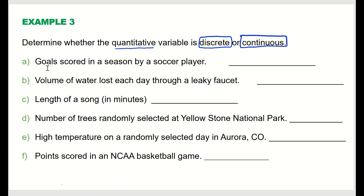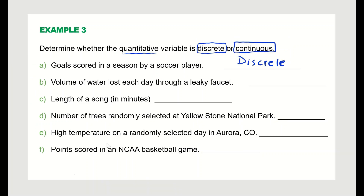Goals scored in a season by a soccer player can be one, two, three, or four — just whole numbers — so that is discrete. Volume of water lost each day through a leaky faucet can be 5 liters, 5.1, 5.2, 5.3 — it can take all decimal values — so that is continuous.